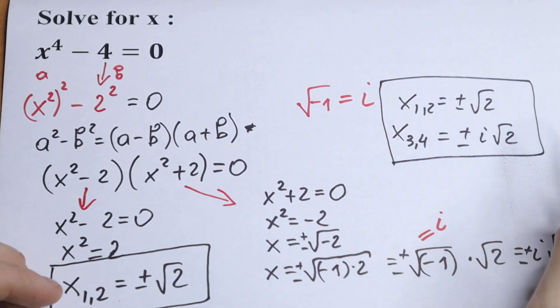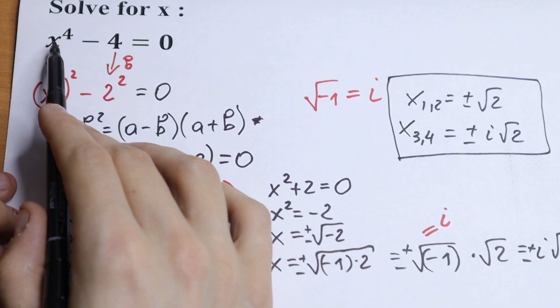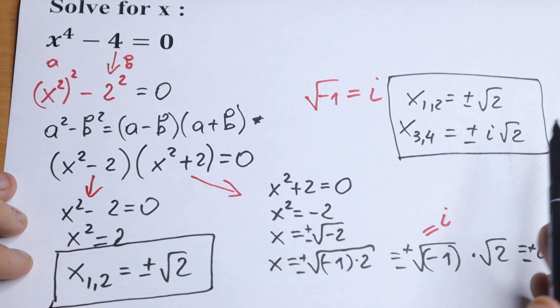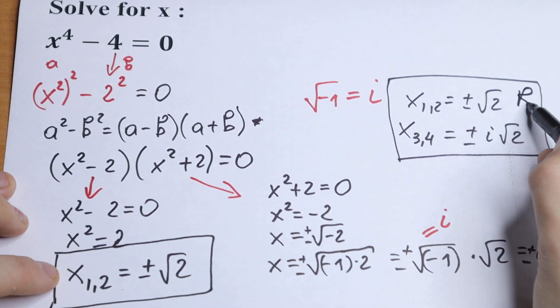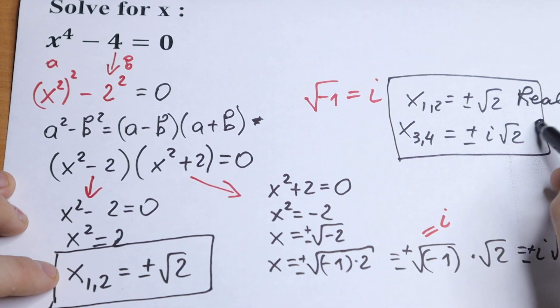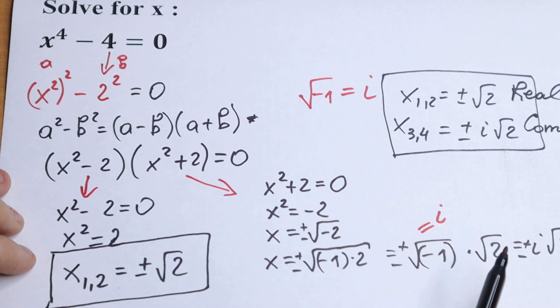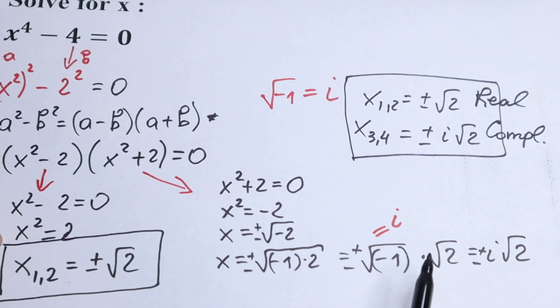This is the roots that we need. Because we know that right here we will have 4 roots. Right here our real number roots. And right here our complex roots. This is our answer.